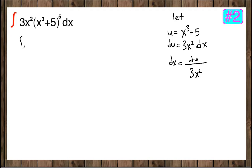Now, let's write in terms of u. We have 3x squared here. This argument in parenthesis is our u. We have 5th power here. And instead of dx, we are going to insert du over 3x squared.